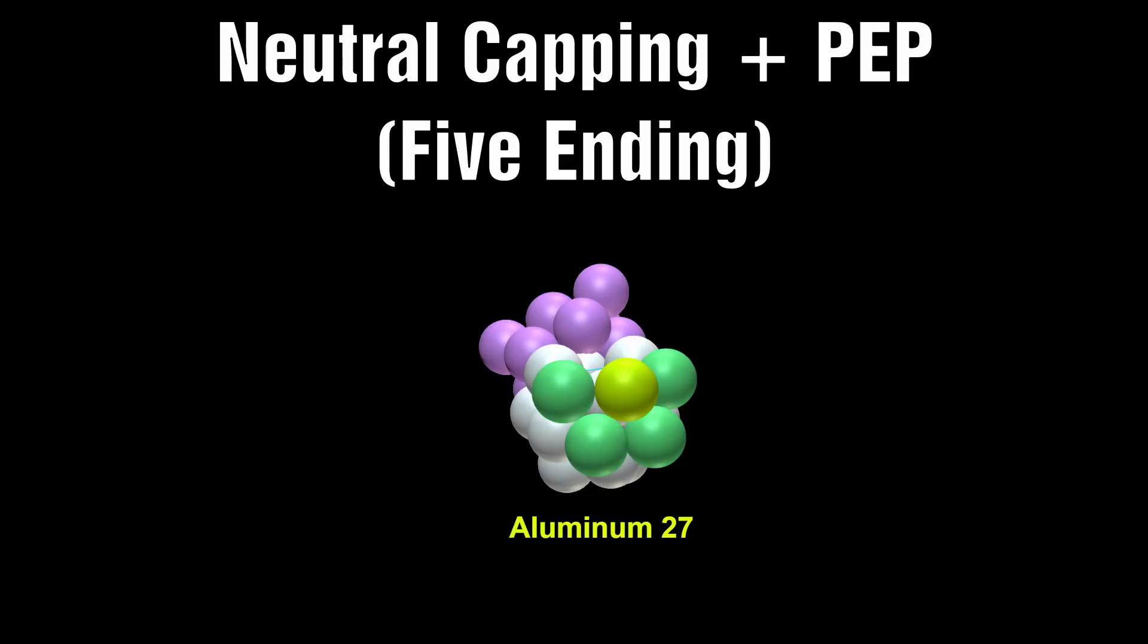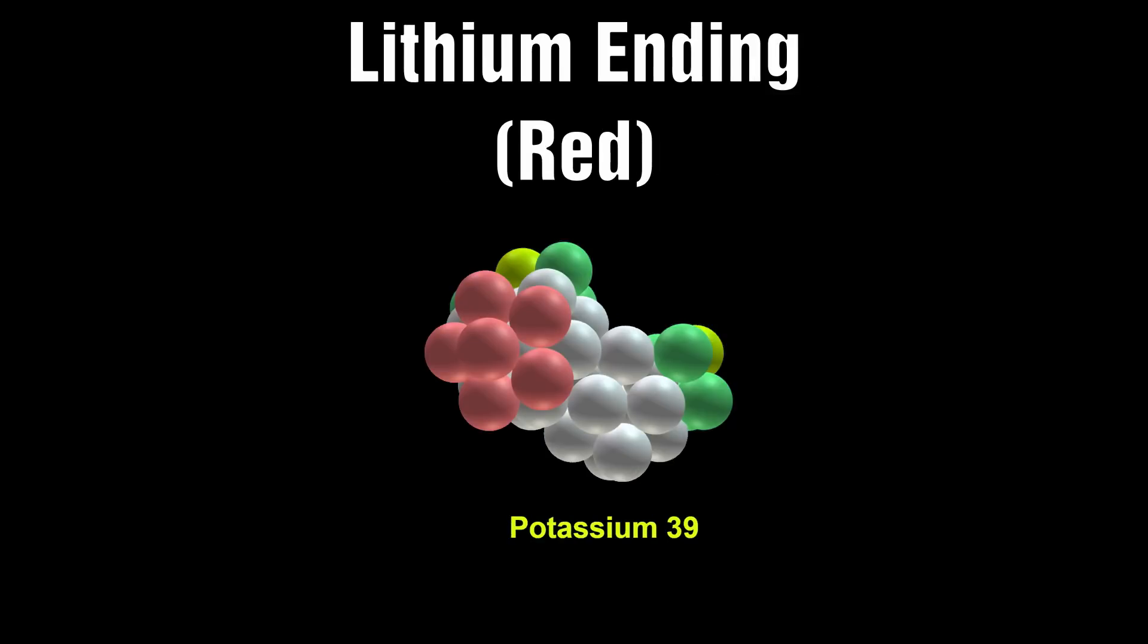Neutral capping with an additional proton-electron pair: an additional proton-electron pair is added to balance a structure or create an isotope. This is called a five ending. A lithium nuclet: the next step in the growth following the neutral capping and the addition of a proton-electron pair is to add another proton and create a lithium nuclet.